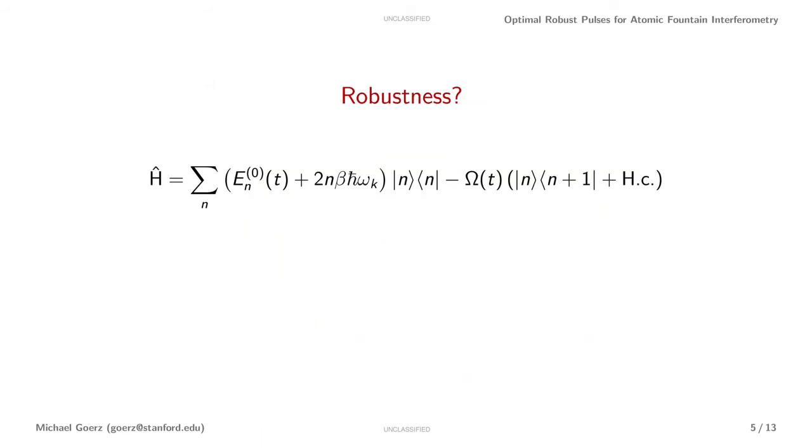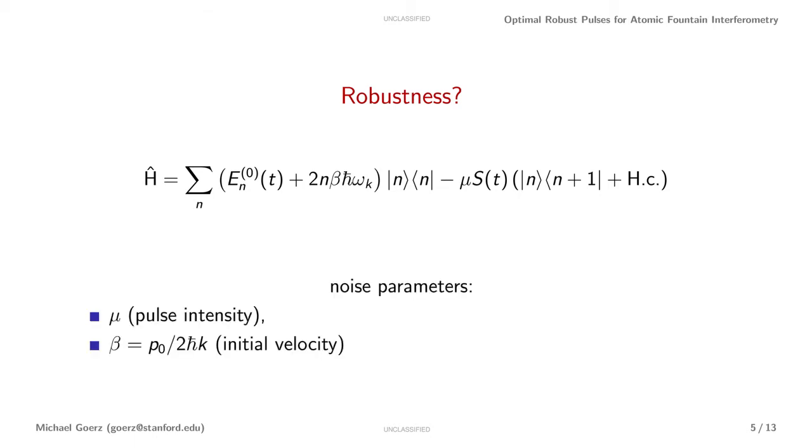Our main question now is how robust is this? Let's look at our Hamiltonian again. We have a shift in the energy levels depending on the initial velocity measured by beta. And then we also have the driving field here, which we can rewrite as a product of an ideal shape S and a factor mu that ideally should be 1. So now we have two noise parameters, one being the pulse intensity mu and one being the initial velocity beta.